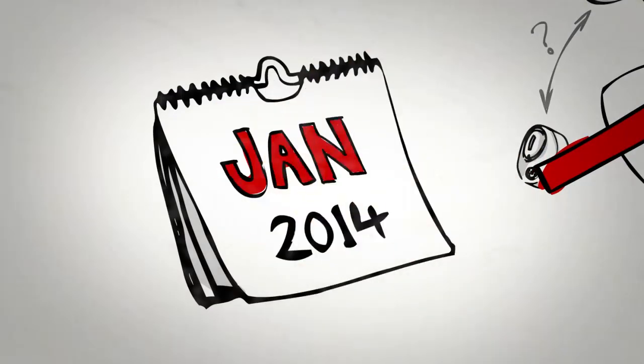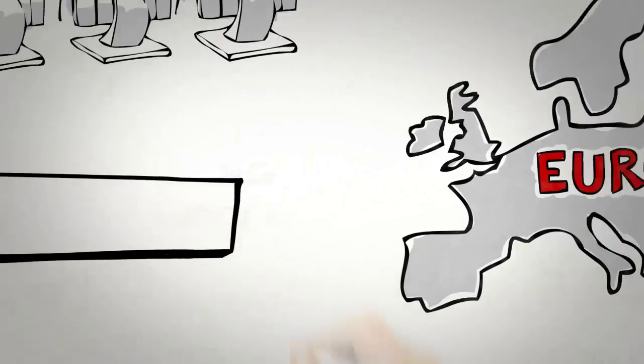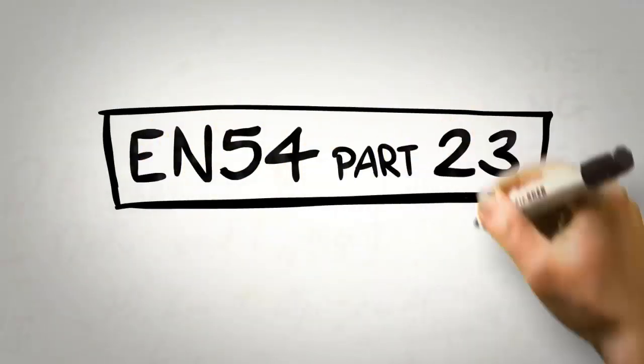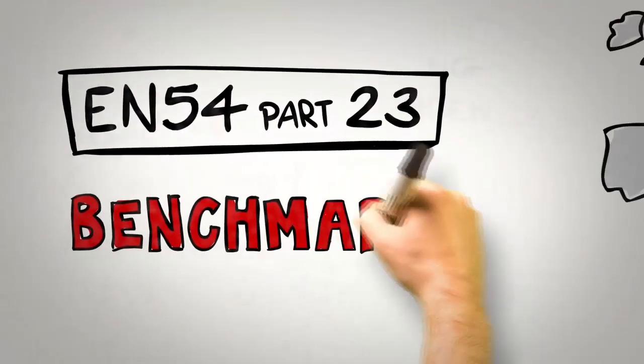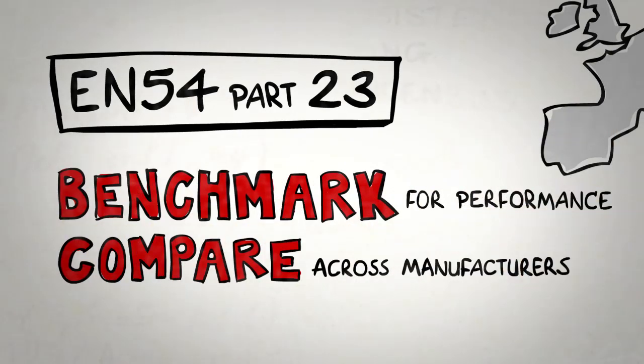In January 2014, a new standard became mandatory across Europe for visual alarm devices, called EN54 Part 23. It sets a clear benchmark for the performance of these products and is a straightforward way to compare across manufacturers.